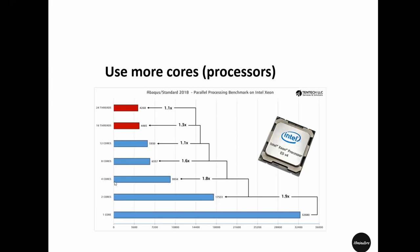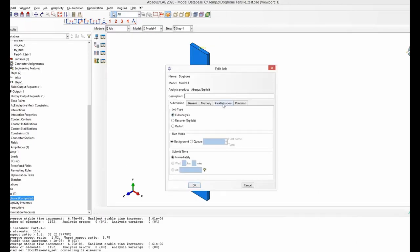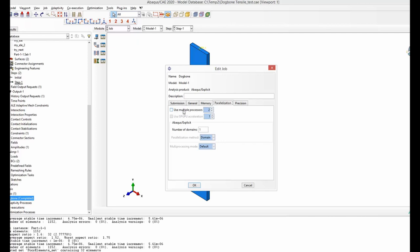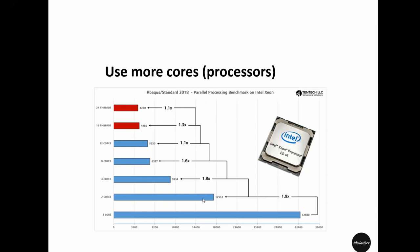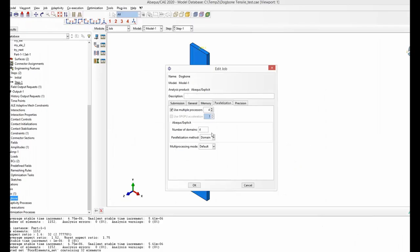Using four cores instead of two speeds up the simulation an additional 1.8 times. In Abaqus job settings, go to parallelization — by default the processor count is set to 2. You can increase it from 2 to 4, which increases your simulation speed approximately 1.8 times. If you are not sure how many cores your processor has, open the Task Manager and check the Performance tab.